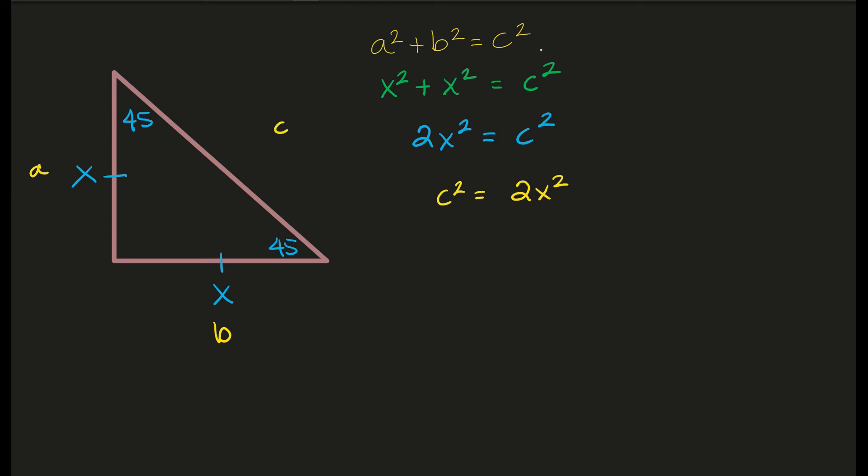If I want to isolate the c, this is currently squared, so all I have to do now is take the square root. So c is going to equal the square root of 2x squared. Well, you can treat this as the square root of 2 times the square root of x squared. And you can simplify x squared. So c here equals x times the square root of 2.